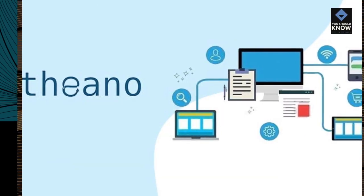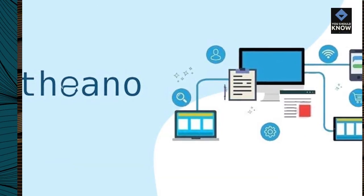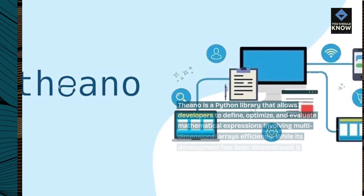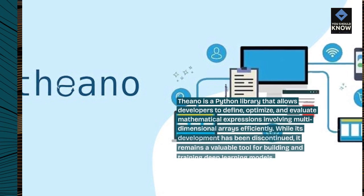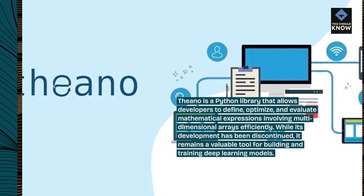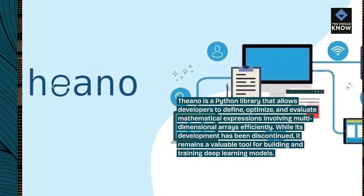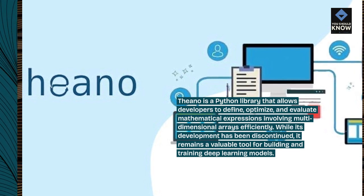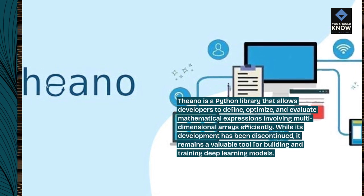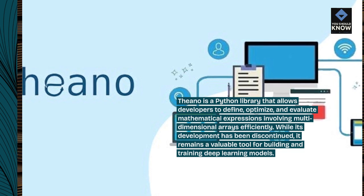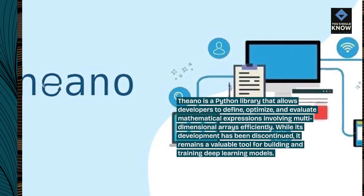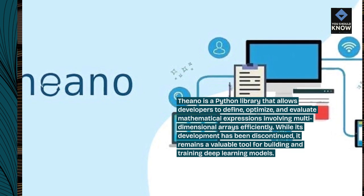Theano is a Python library that allows developers to define, optimize, and evaluate mathematical expressions involving multidimensional arrays efficiently. While its development has been discontinued, it remains a valuable tool for building and training deep learning models.